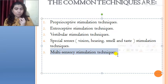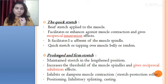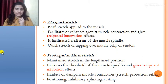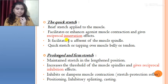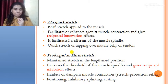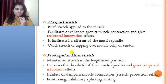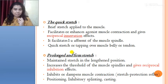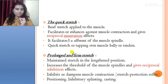Starting with quick stretch: a brief stretch is applied to the muscle, which either facilitates or enhances the agonist muscle contraction and gives a reciprocal innervation effect. It mediates its action through type 1a afferent fibers of the muscle spindle. Tapping over the muscle belly or tendon is an example. If I apply a quick stretch to the biceps, it will reciprocally innervate the triceps — so if I want to increase elbow extension control, I apply a quick stretch to the biceps.